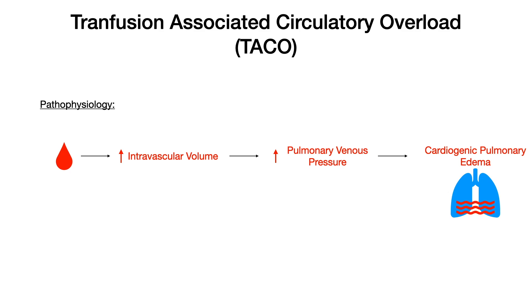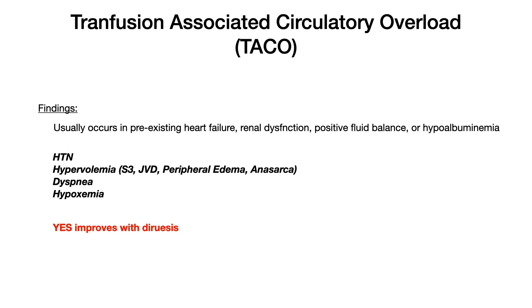A high-yield difference between TACO and TRALI is that in TACO, the pulmonary edema is cardiogenic — it is inherently cardiogenic. As you'll see in TRALI, it's not. Findings for TACO: this usually occurs in patients with underlying cardiac disease, underlying heart failure, underlying renal dysfunction, patients with positive fluid balances, or patients in states of hypoalbuminemia — that is, patients who are more likely to have exacerbations leading to cardiogenic pulmonary edema. Patients who are more prone to becoming hypervolemic are more prone to experiencing TACO when they get a transfusion.